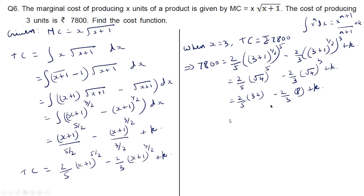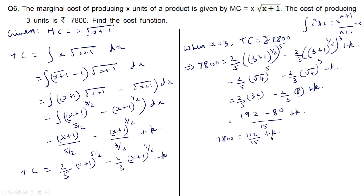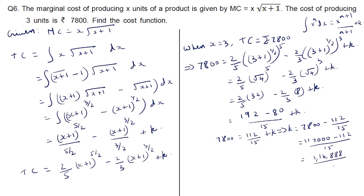Taking LCM of 15 and simplifying: 32 times 6 is 192, and 5 times 2 times 8 is 80, giving 7800 equals (192 minus 80) upon 15 plus k, which is 112 upon 15 plus k. So k equals 7800 minus 112 upon 15. Taking LCM and simplifying gives 117000 minus 112 upon 15, which is 116888 upon 15.